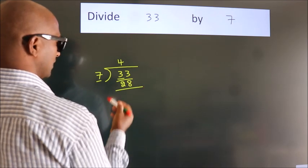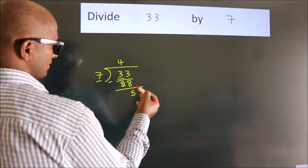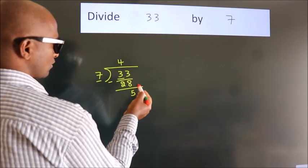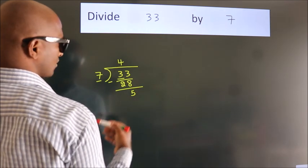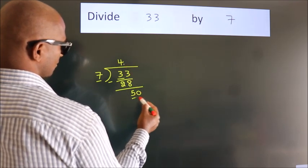Now we should subtract. We get 5. After this, no more numbers to bring down. So what we do is put a dot and take 0. So 50.